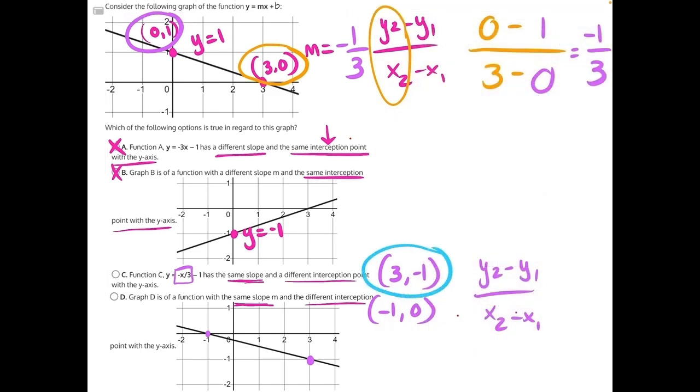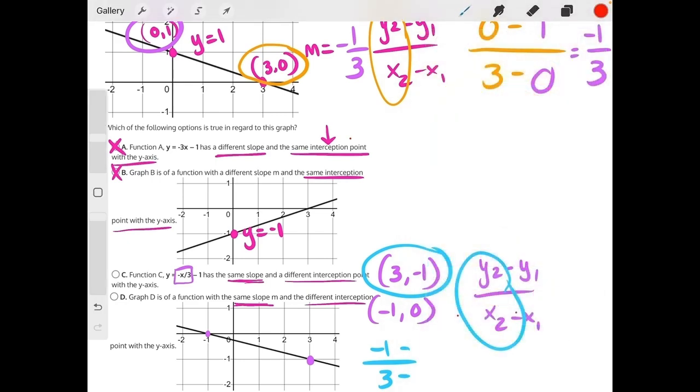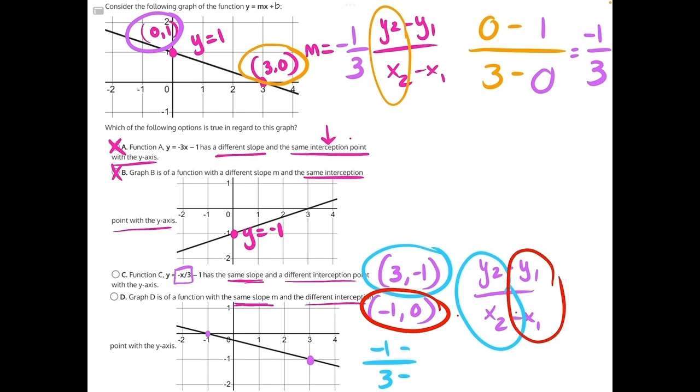I'm going to use this first coordinate point for my y2 and my x2. So I have negative 1 over 3 minus. Then I'll use this set of coordinate points for my y1 and my x1. So I'll have 0 up here and negative 1 down here. Subtracting a negative is the same as adding a positive, so 3 plus 1 will give us 4. And then a negative 1 minus 0 will just give us negative 1.